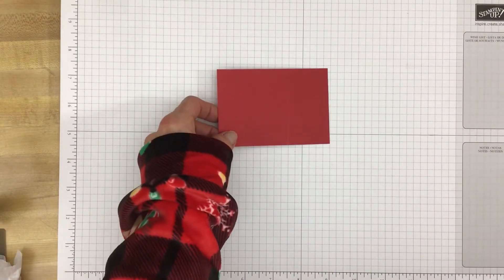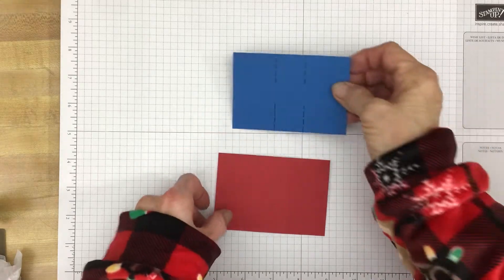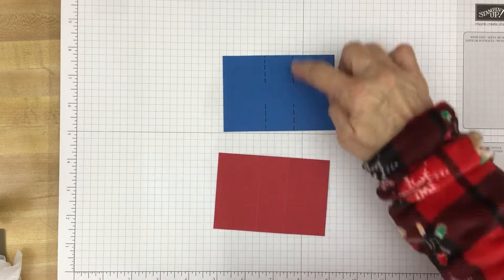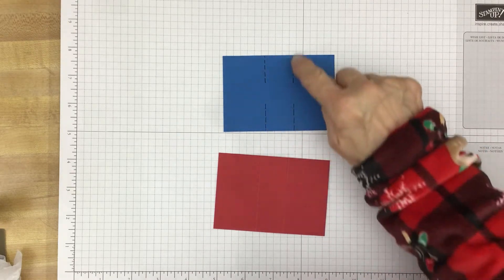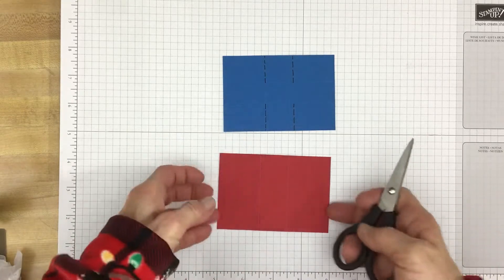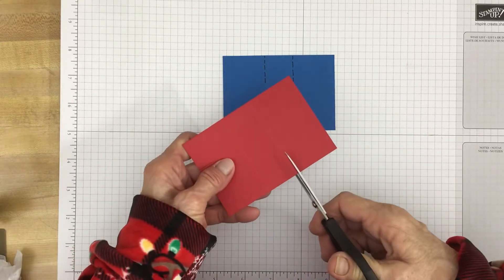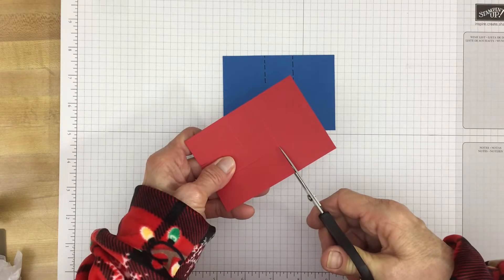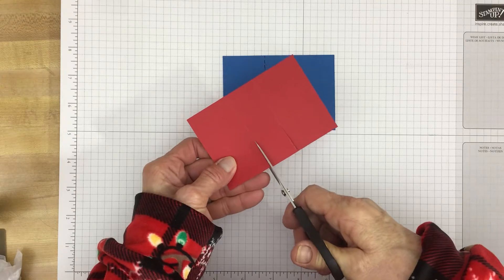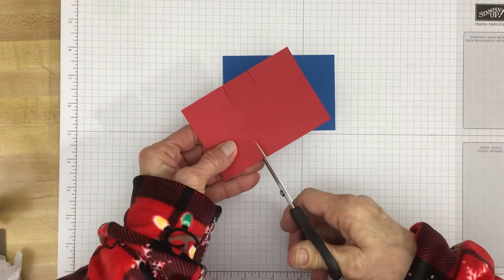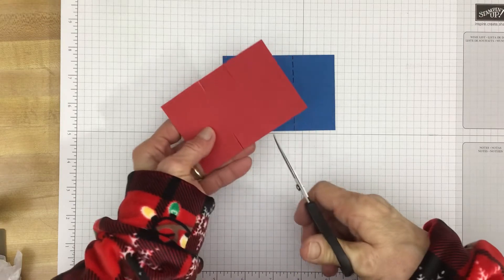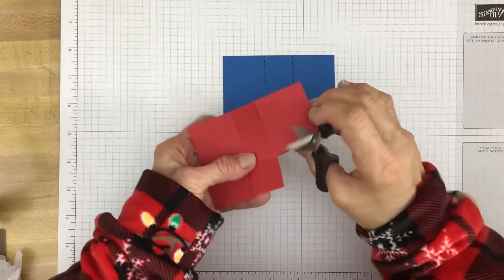Now we're going to take some scissors and I have this piece of cardstock here, here are the score lines. And on these shorter score lines we're going to cut those. So I have my scissors. And I'm just going to cut right along those lines to the center score line. Do it on the other side, the exact same thing.